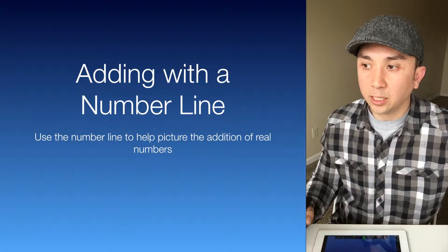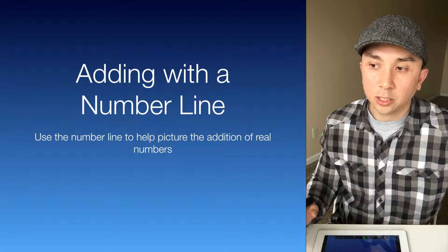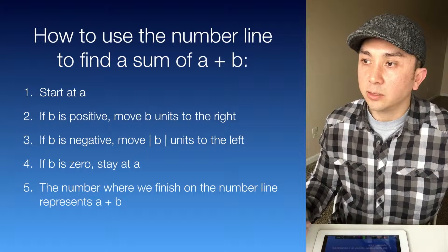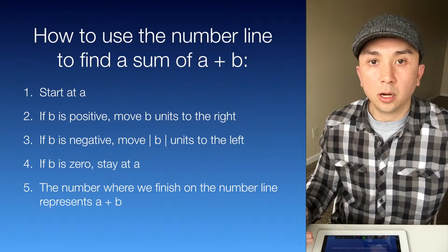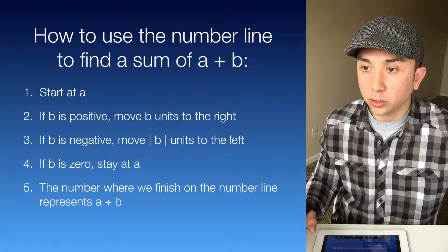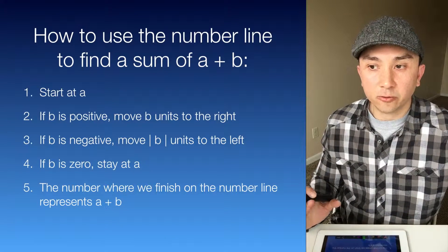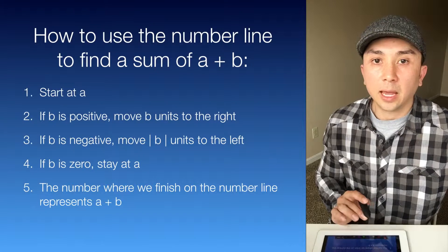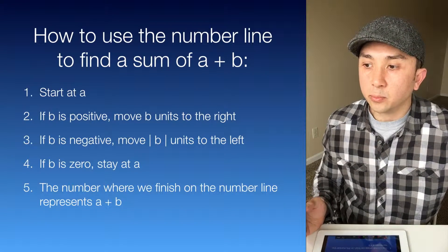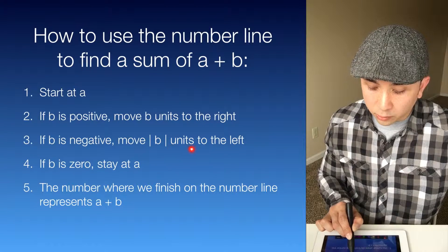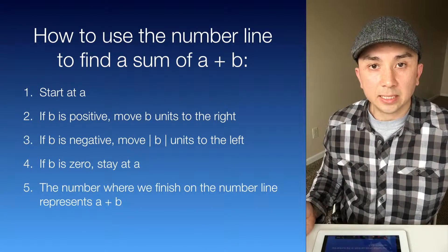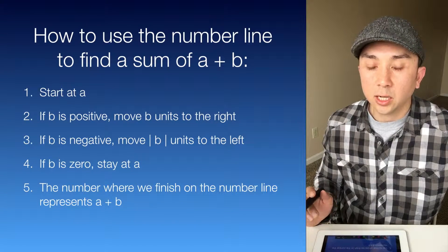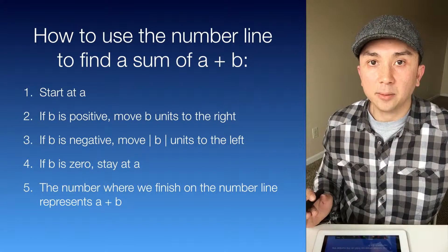So adding with a number line — we use the number line to help picture the addition of real numbers. Here's how we use the number line to find a sum of a plus b. First we're going to start at a. If b is positive, we move b units to the right. If b is negative, we move the absolute value of b units to the left. And if b is 0, we stay at a. The number where we finish represents the addition of a plus b.